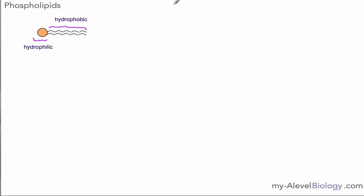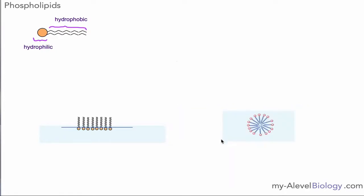Here's our phospholipid, with the hydrophobic tail and the hydrophilic head. If you put a bunch of these in water, because the tails are hydrophobic they try hard to be away from the water — you can see them poking up out of the water. In other circumstances, if forced under the water, they form spherical shapes called micelles, with the tails pointing inward being repelled by the water and a layer of hydrophilic heads forming the sphere on the outside.